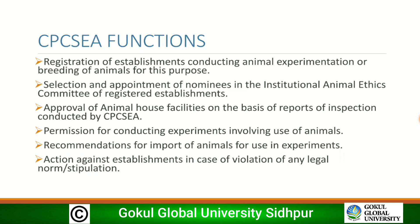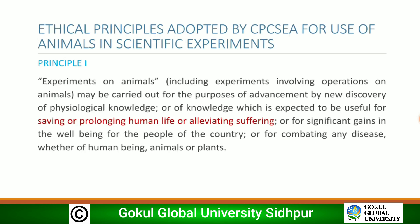The main functions of CPCSEA include: registration of establishments conducting animal experimentation or breeding of animals; selection and appointment of nominees to the Institutional Animal Ethical Committee (IAEC); approval of animal house facilities based on inspection reports; permission for conducting experiments involving animals; recommendations for import of animals; and action against establishments in case of violation of any legal norm.